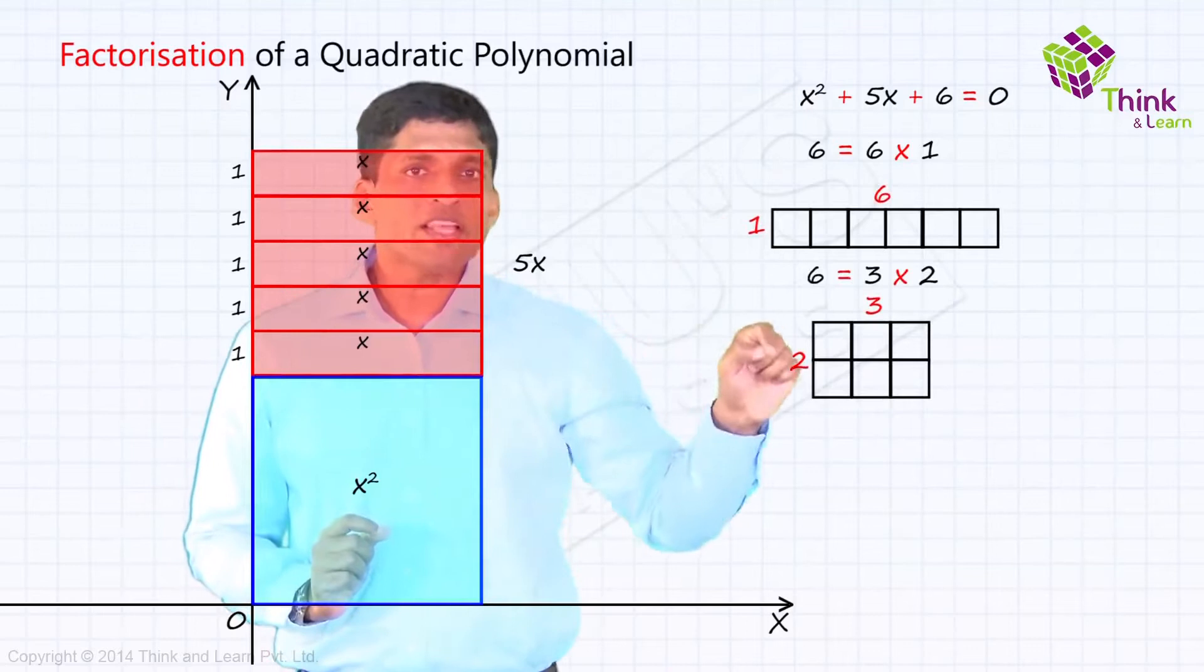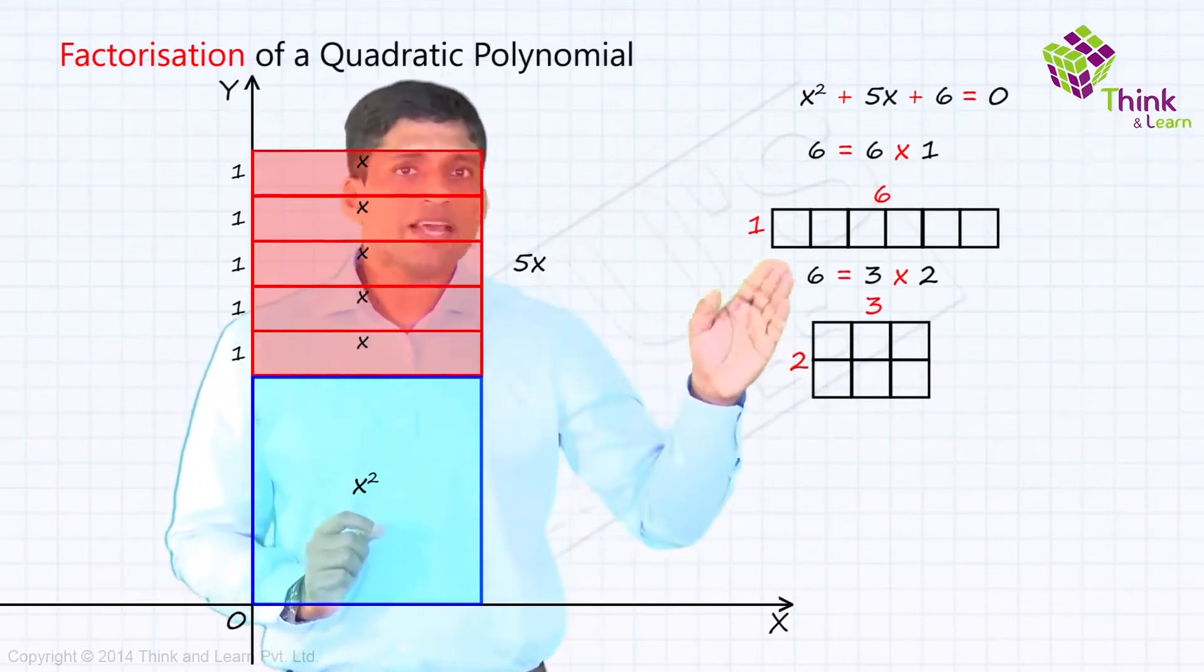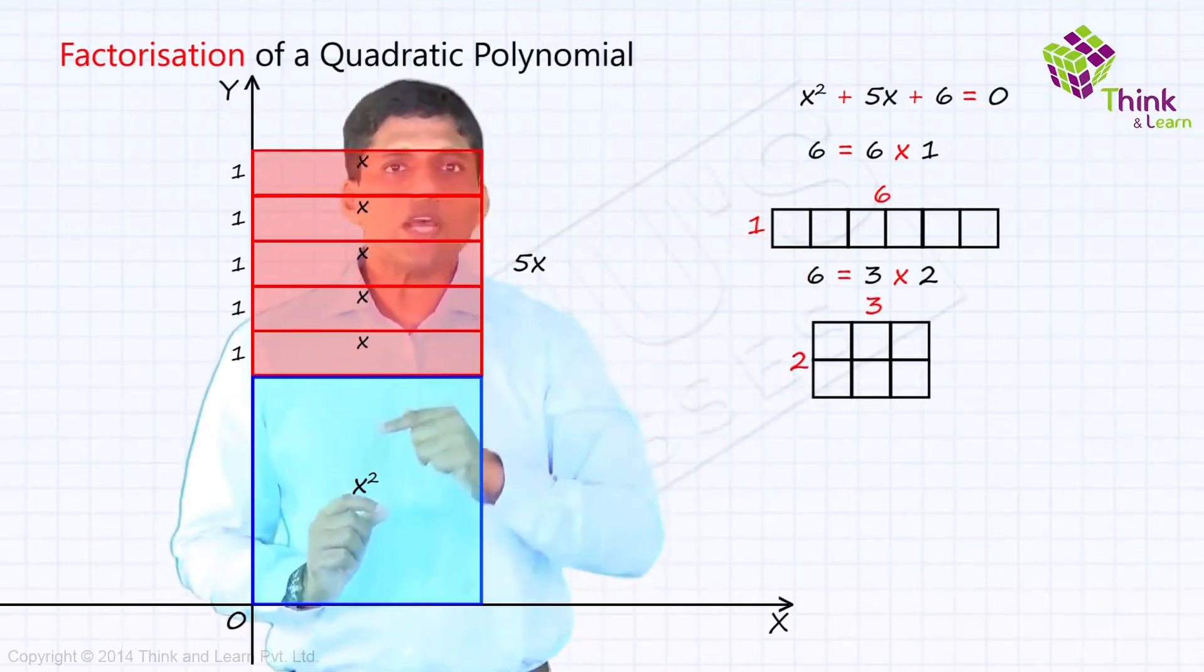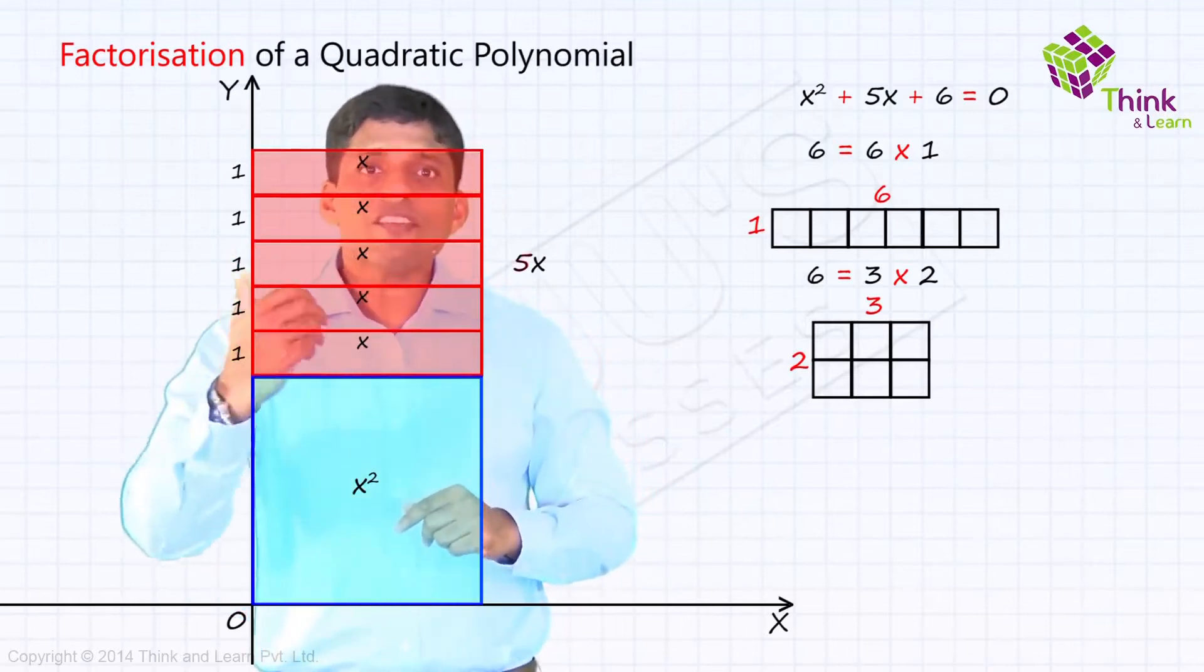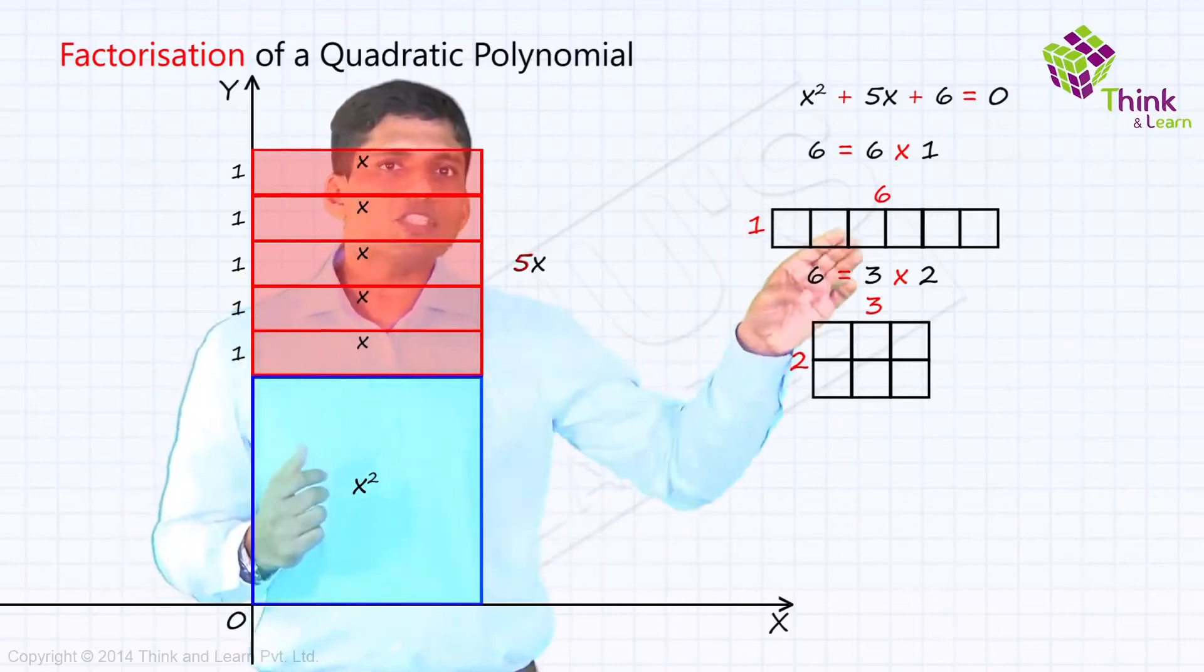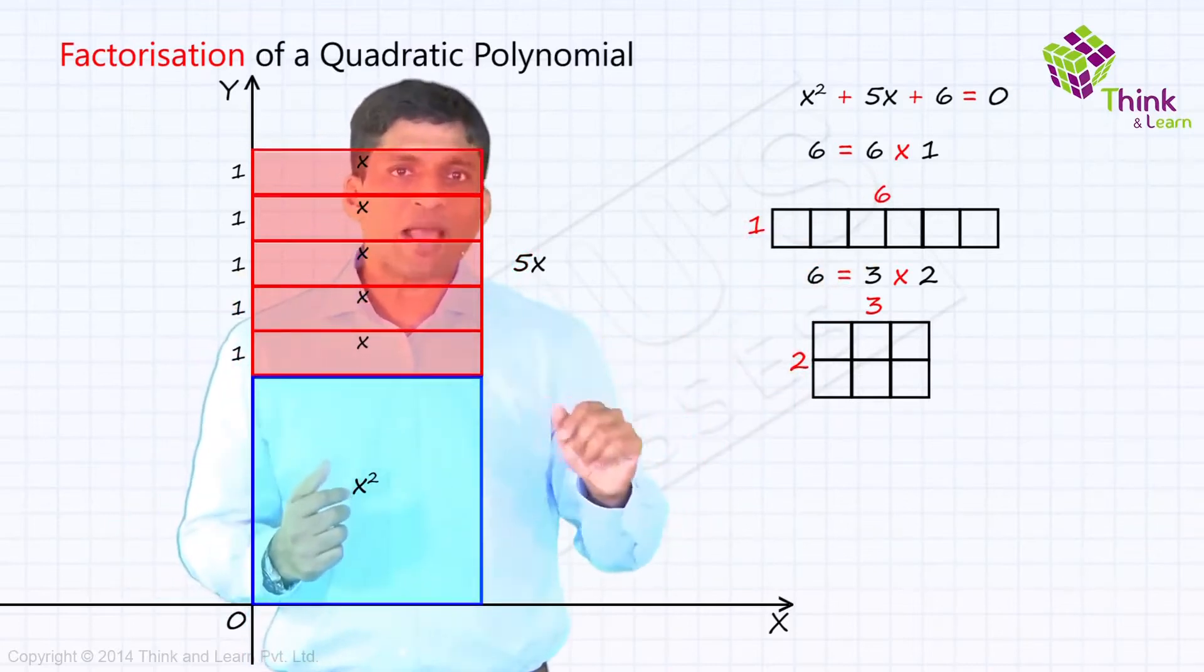But while doing this, you should make sure that the sum of this length and breadth is matching with the coefficient of x or 5x in this case. Now, that is why this 3 and 2 will exactly match.